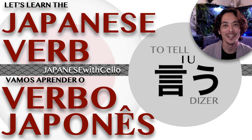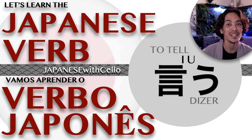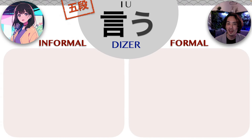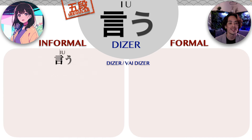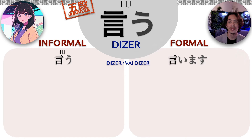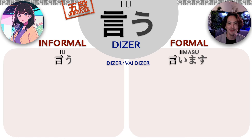Konnichiwa! Bem-vindos ao Japanese with Cello. E nesta aula, nós vamos aprender o verbo japonês iu, que significa dizer. O verbo iu é um verbo irregular. Na forma do presente e do futuro, a forma informal vai ser iu — que é a nossa forma do dicionário. E a forma formal é iimasu. Como tem dois i, é como se a gente estendesse o som do i: iimasu.